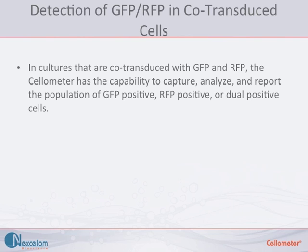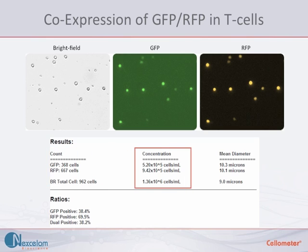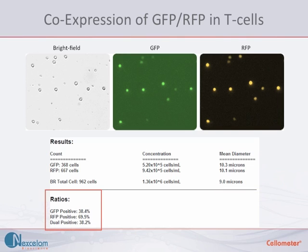The third application examines cells in a culture that co-express GFP and RFP. Cellometer can capture, analyze, and report the percent of cells that are GFP positive, RFP positive, or dual positive. In this example, we are looking at T cells that are co-expressing GFP and RFP. Brightfield, GFP, and RFP images are acquired and analyzed. The reported results include the number of cells counted for each population, the concentration, the mean diameter, and the ratios of GFP positive, RFP positive, and dual positive cell populations. In this example, about 38% of the cells are both GFP and RFP positive.